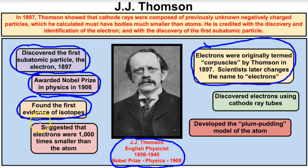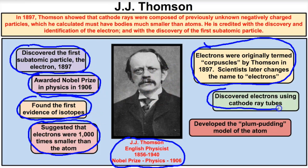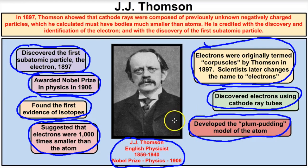So how did Thompson discover the electron? He discovers it using cathode ray tubes — or Crookes tubes as they were called at the time. That led to his development of the model of the atom known as the plum pudding model.